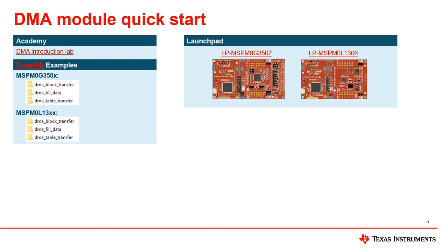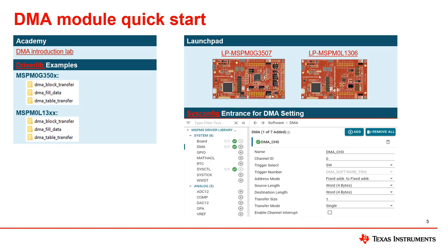We can also refer to the examples in driver lab in the SDK, the datasheet, and the technical reference manual. If you want to configure the DMA, it is recommended to use the system config graphical configuration tool. Use the appropriate module and fill in the parameters. The code containing the DMA configuration can be generated after compilation, greatly reducing the development time.